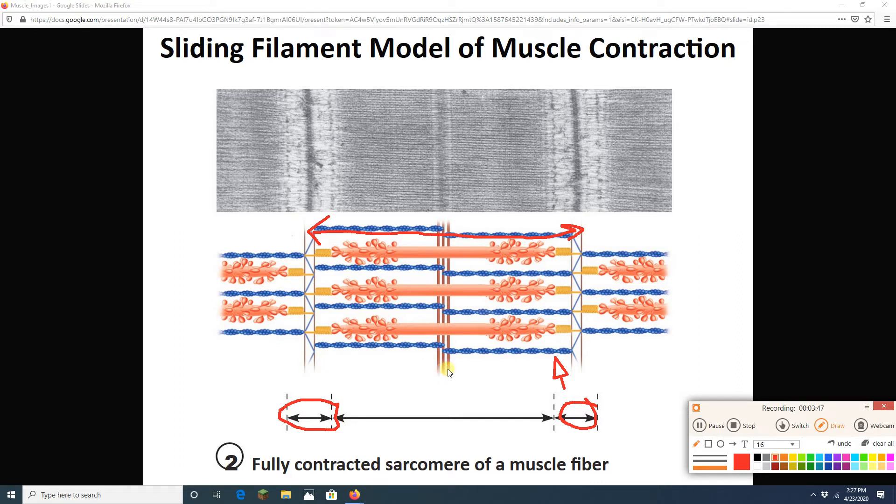When sarcomeres contract, Z-discs get closer together. Z-discs pull on the sarcolemma, and the muscle fiber shrinks. The sarcolemma pulls on the endomysium. The endomysium pulls on the perimysium. The perimysium pulls on the epimysium. The epimysium pulls on the tendon, which pulls on bones, and you get movement. Pause that. Rewind that. Listen to that again. Write that whole sequence down.